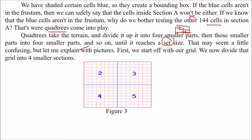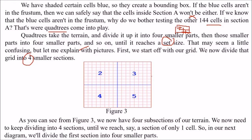First, we start off with our grid and divide that grid into four smaller sections. You can say the grid is divided into four — one, two, three, four smaller sections. We now need to keep dividing into four sections until we reach, say, a section of only one cell. So we keep dividing until we reach that one cell.